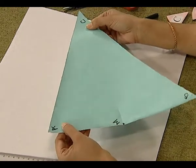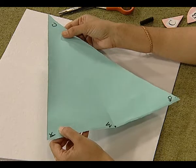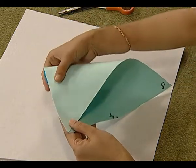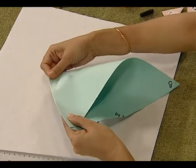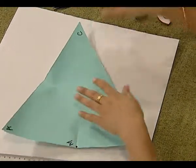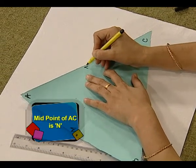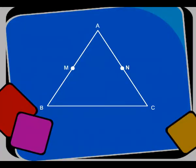Similarly, get the midpoint of side AC by paper folding. Fold along AC in such a way that point C completely coincides with point A. Unfold it and on the crease, mark the midpoint as N. This way, we have got the midpoint of side AB as M and the midpoint of side AC as N.